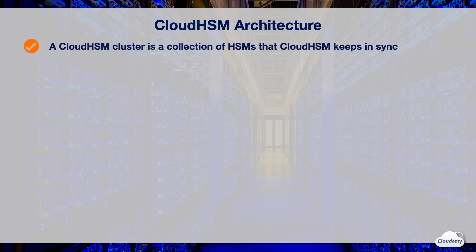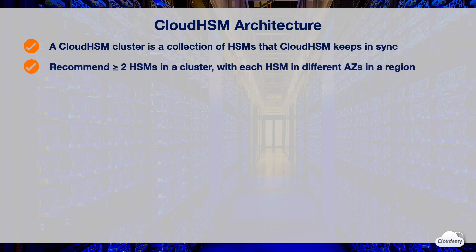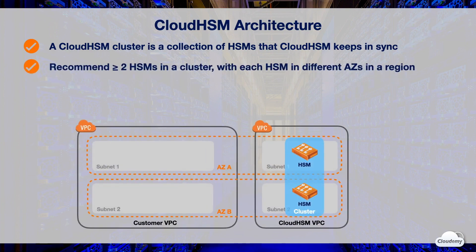Cloud HSM provides hardware security modules in a cluster. A cluster is a collection of individual HSMs that Cloud HSM keeps in sync. You can place HSMs in different availability zones in an AWS region. Additional HSMs provide higher performance in a cluster. Spreading clusters across availability zones provides redundancy and high availability. AWS recommends a minimum of two HSMs in each cluster, with each HSM in different availability zones within an AWS region.